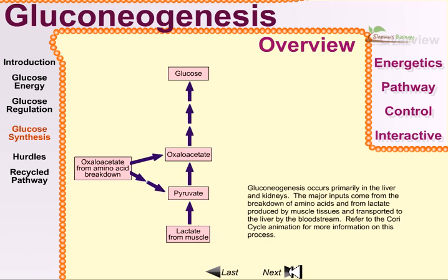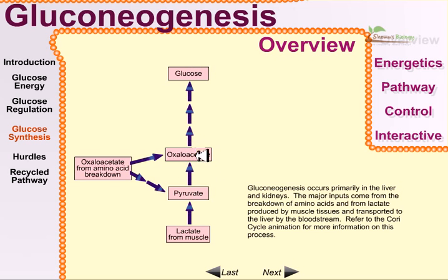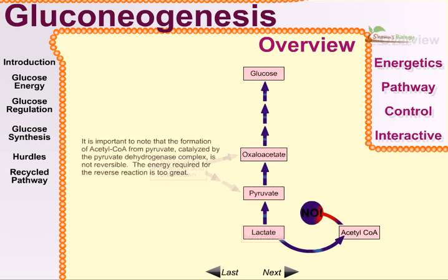Gluconeogenesis occurs primarily in the liver and kidney cells. The major inputs come from the breakdown of amino acids and from lactate produced by muscle tissues and transported to the liver by the bloodstream. Lactate from muscle can be converted into pyruvate, and then pyruvate can be converted into glucose — one of the intermediaries being oxaloacetate, which is also a very important ingredient of the TCA cycle. Both pyruvate and oxaloacetate can be produced by the breakdown of amino acids.